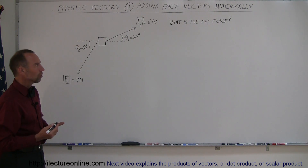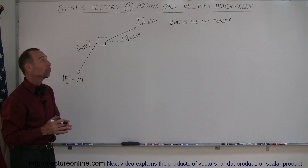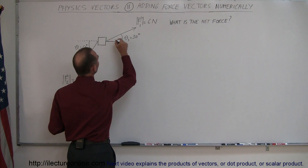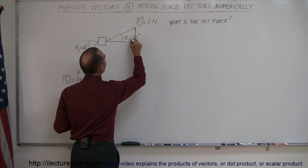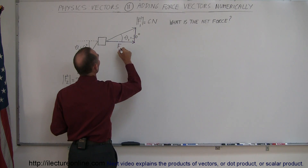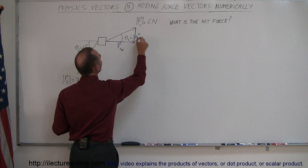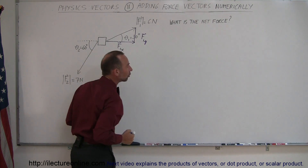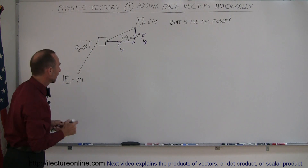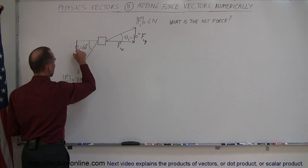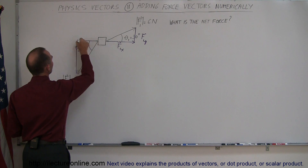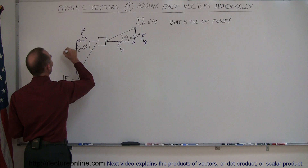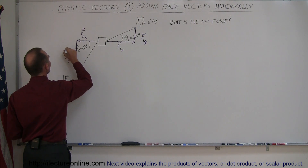Before we can add the vectors together, we have to find the X and Y components of each vector. We can do that by drawing a triangle. This becomes F1 in the X direction and this becomes F1 in the Y direction — in other words, the X and Y components of F1. Similarly, I can draw a triangle for the second vector, and you can see this would be the X component and this would be the Y component of the second vector.